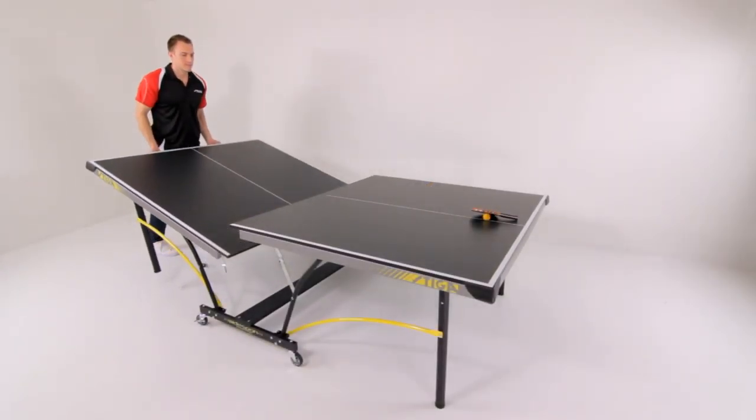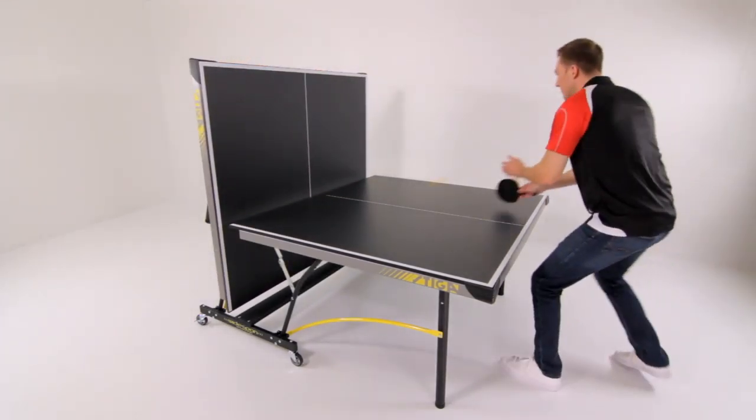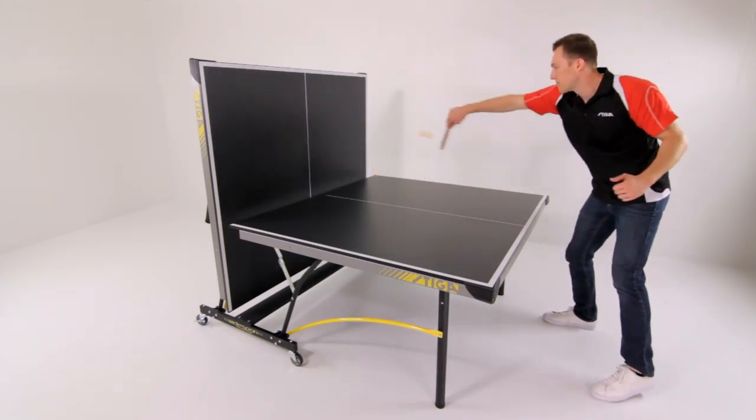The Stiga Synergy allows you to fold one half of your table to form the playback position. Use this arrangement to practice rallying and sharpen your skills.